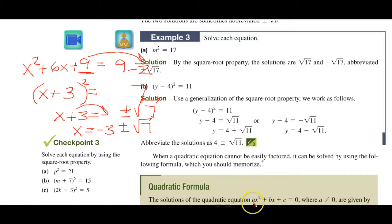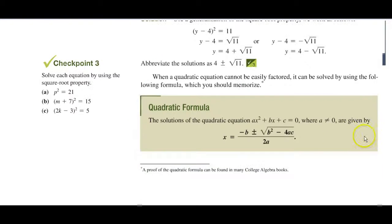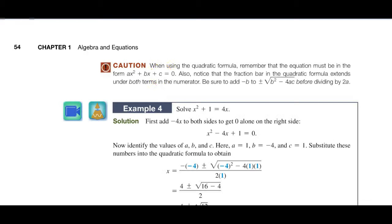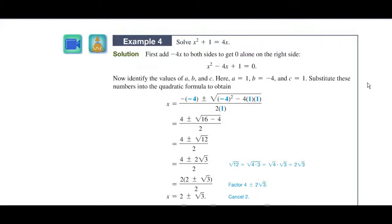If you take the quadratic equation and use the principle of completing the square — taking the C term to the other side, dividing everything by A, and doing a number of steps — you end up solving for x. But you need to know values of A, B, and C to put into this formula to actually get a solution. With that in mind, we go to our next page and take a look at the quadratic formula.